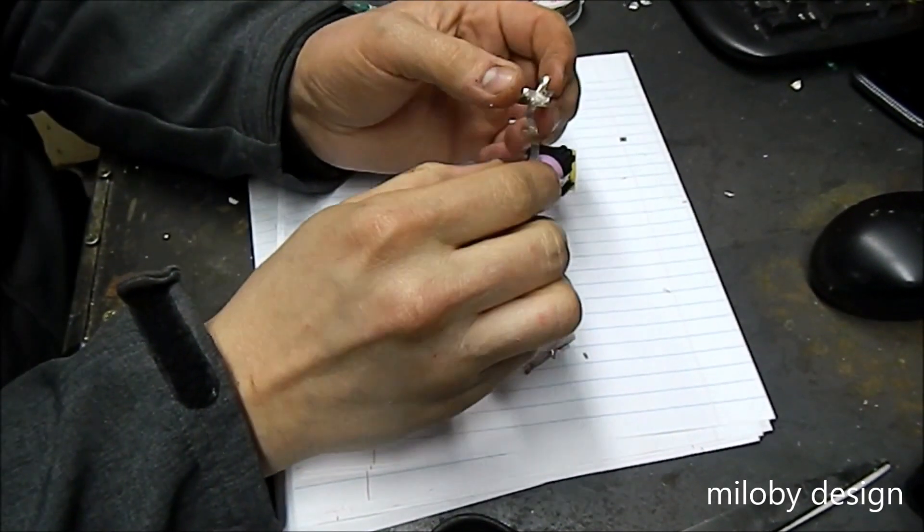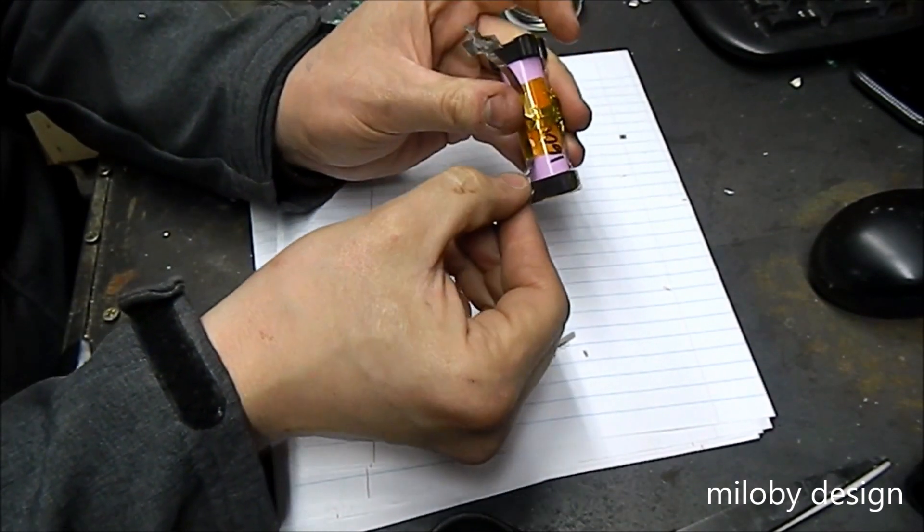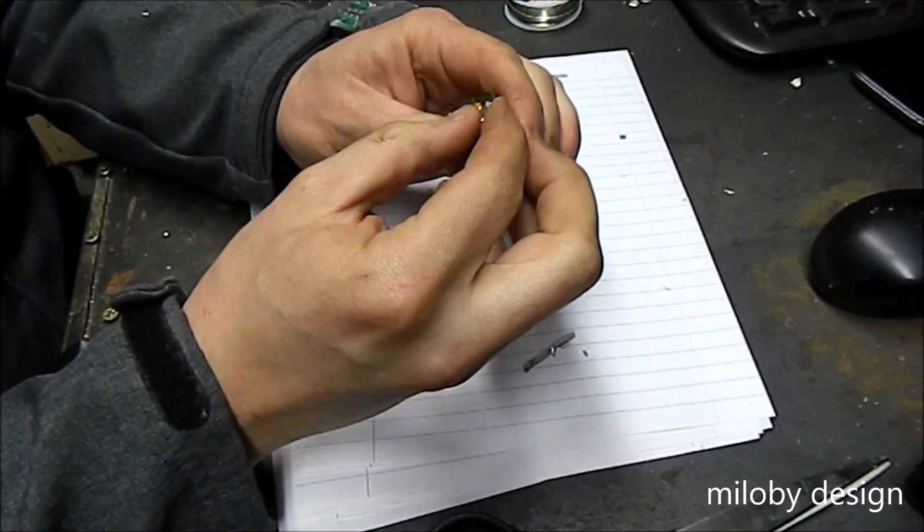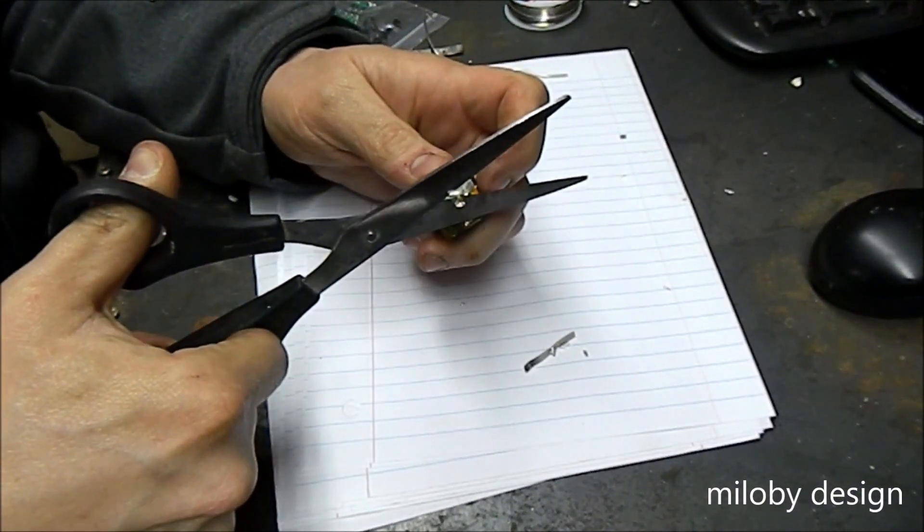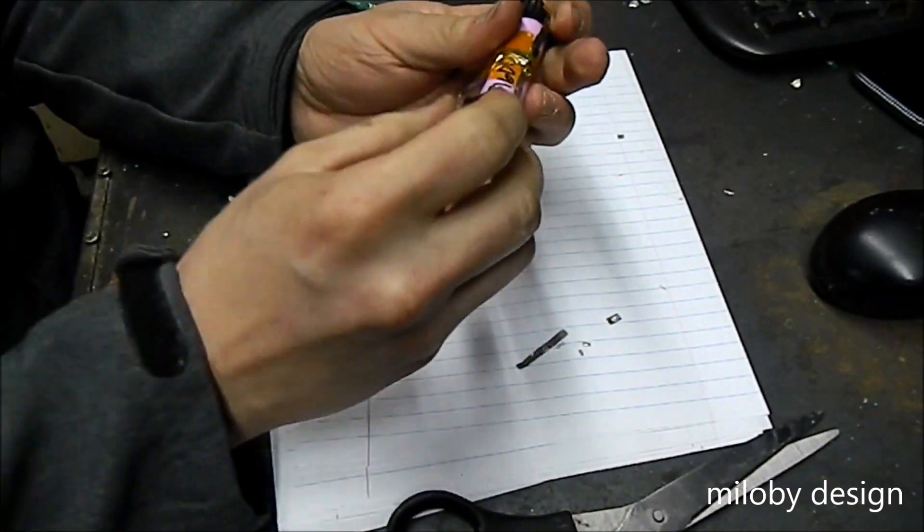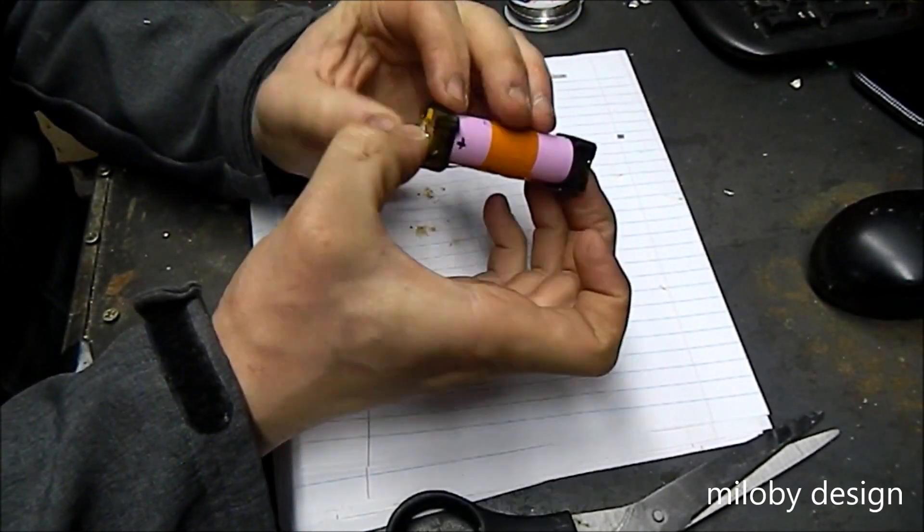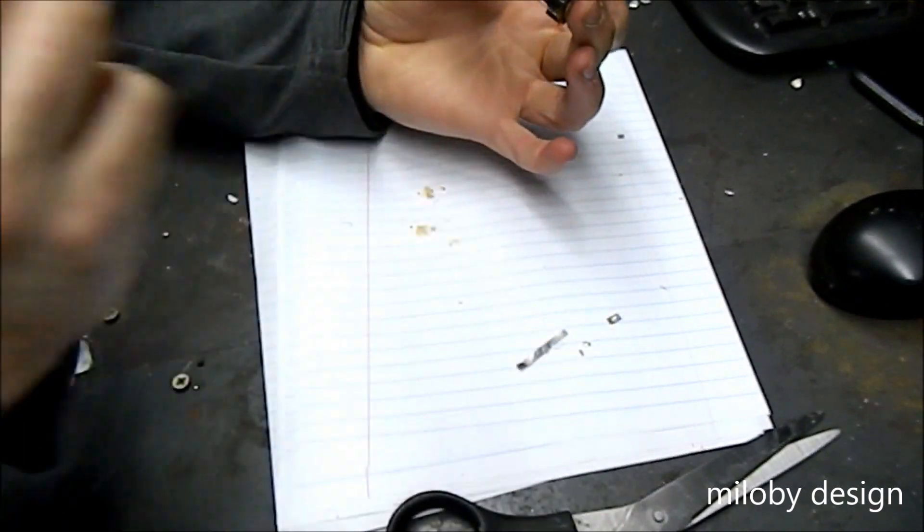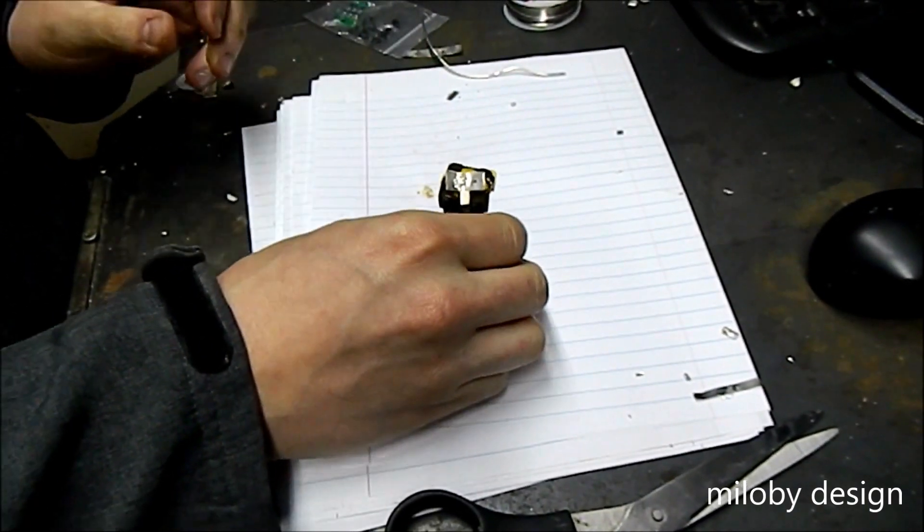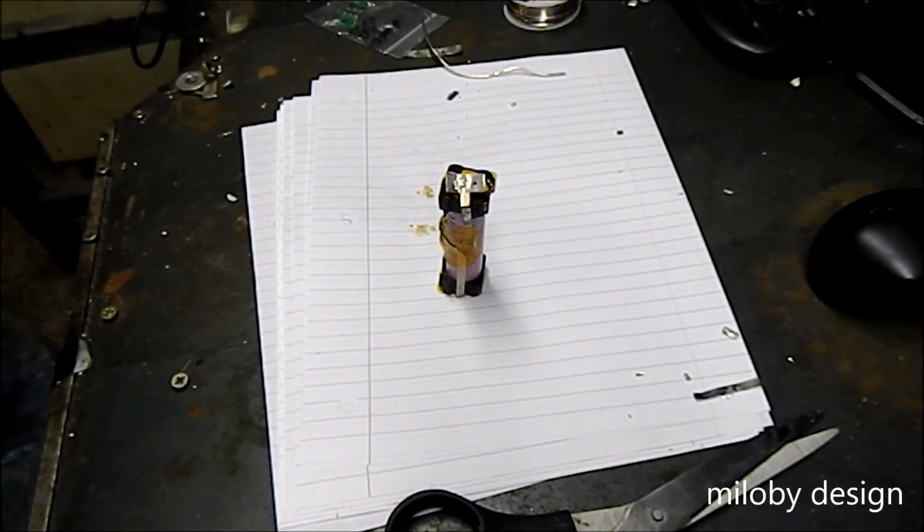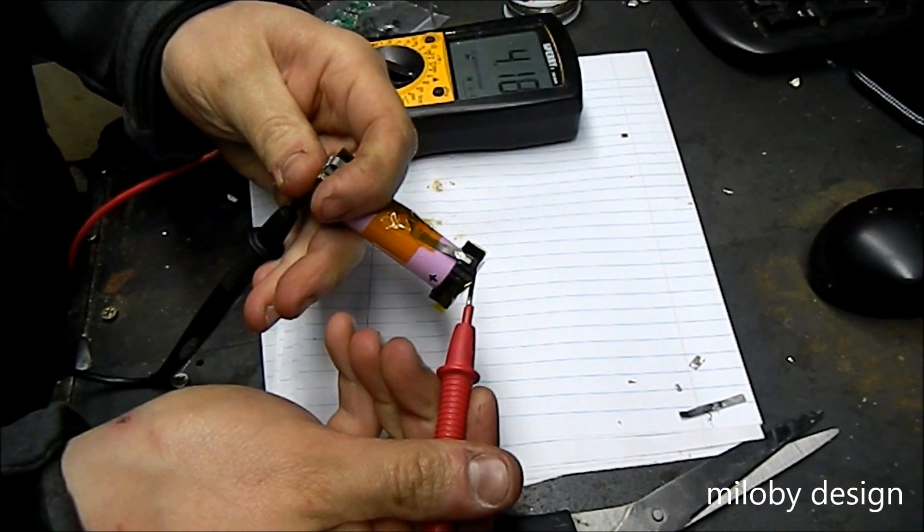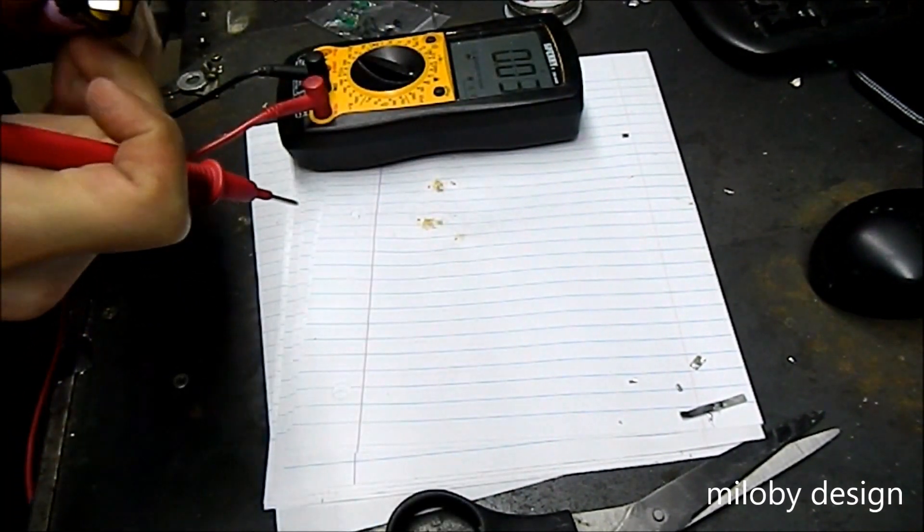I just went ahead and soldered these nickel strips here on the end. I just did it off camera. Took me a couple tries to actually get it to stick. That should give us almost our end product. Let's get a voltage reading on that, see if that little single cell BMS actually works. We have voltage, 4.17 volts. Great.